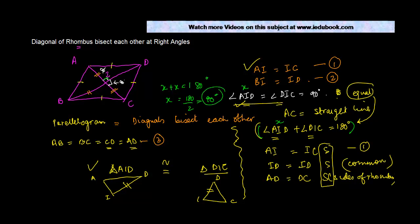Hence, these two angles are 90 degree. And we can say that the diagonals of a rhombus bisect each other at right angles.